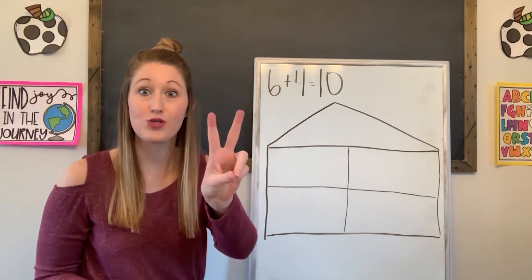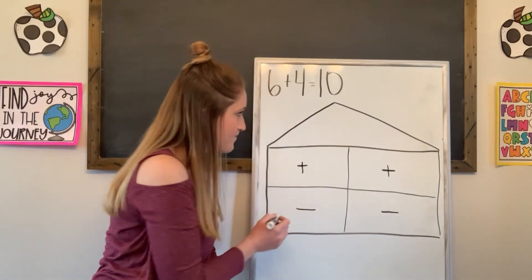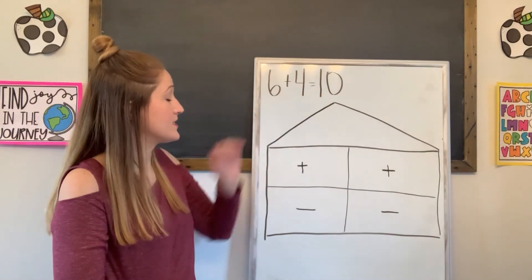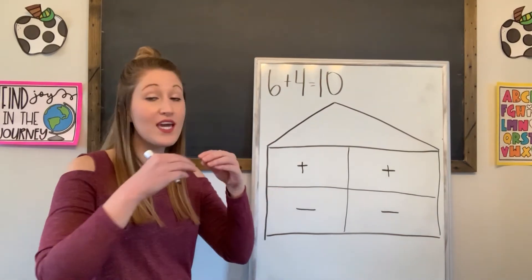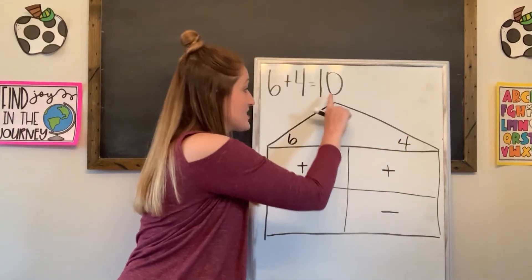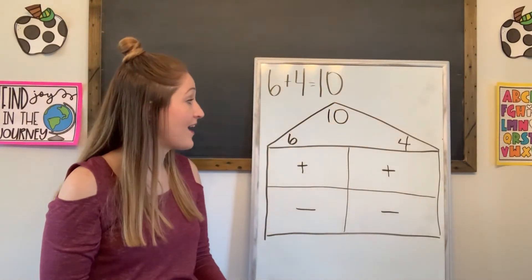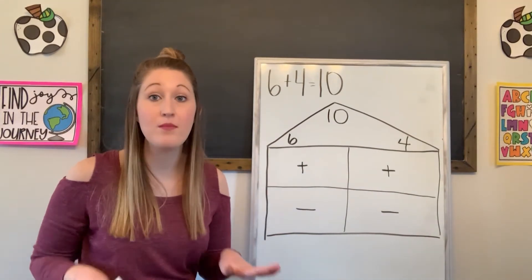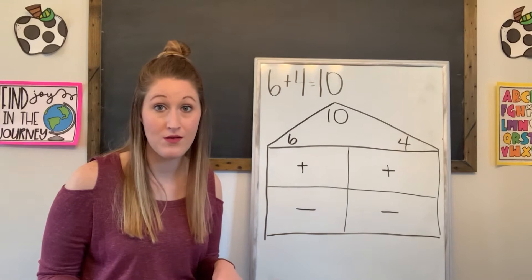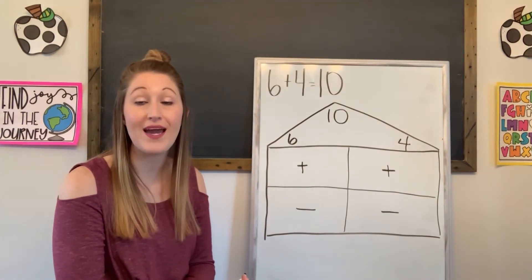This fact family comes and lives in a house. That house has a triangle roof and it has four rooms. Fact families have four different addition and subtraction problems — two addition problems and two subtraction problems. In the roof, I'm gonna put the numbers we're working with: six, four, and 10. Six and four are my addends, so they go at the base of my roof. My 10, my sum, is gonna go up at the top of my roof.